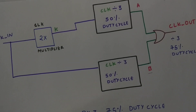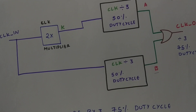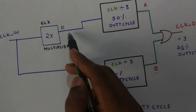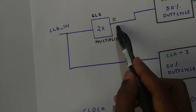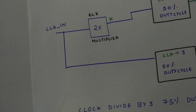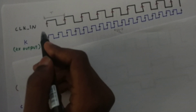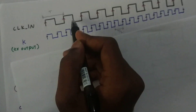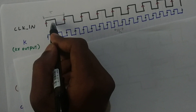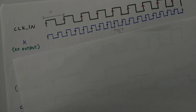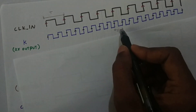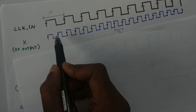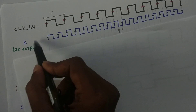Let's go through the timing diagrams for K, A, B, and clock-out. Clock-in has time period T. Passing it through the 2x multiplier doubles the frequency and halves the time period, so the clock period of K is T/2. A single clock period of clock-in fits two clock periods of K.